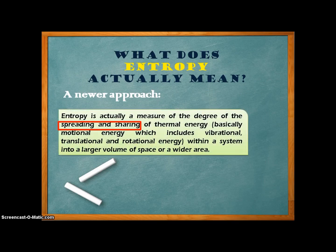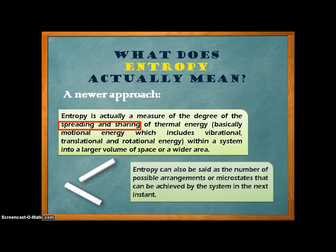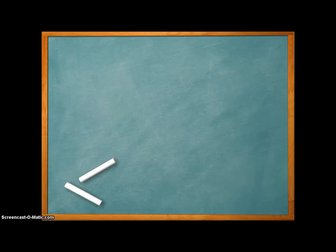Entropy is actually a measure of the degree of spreading and sharing of thermal energy, basically motional energy, within a system into a larger volume of space or a wider area. Entropy can also be said as the number of possible arrangements or microstates that can be achieved by the system in the next instant.